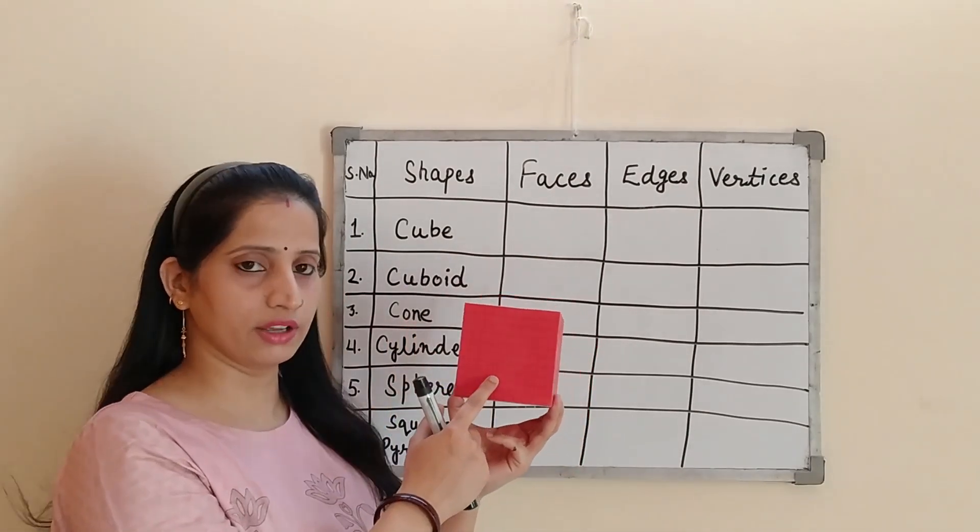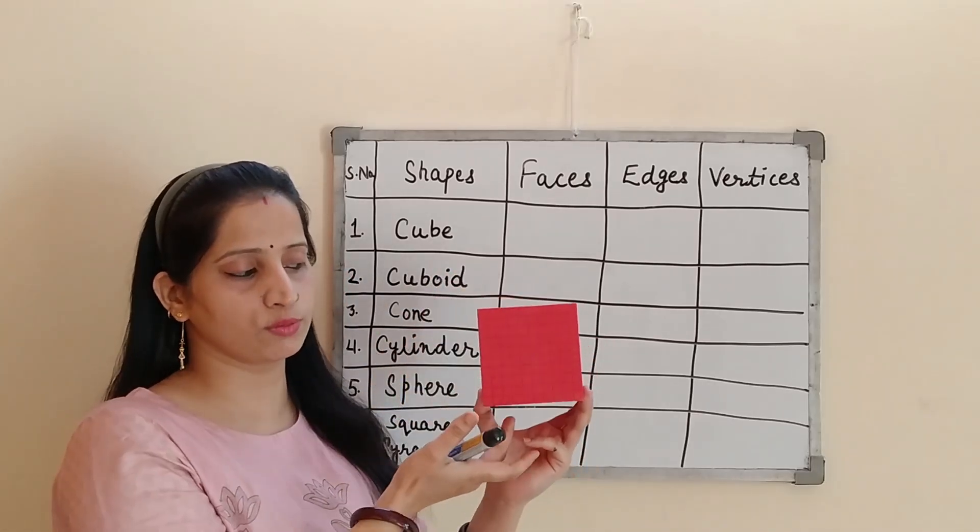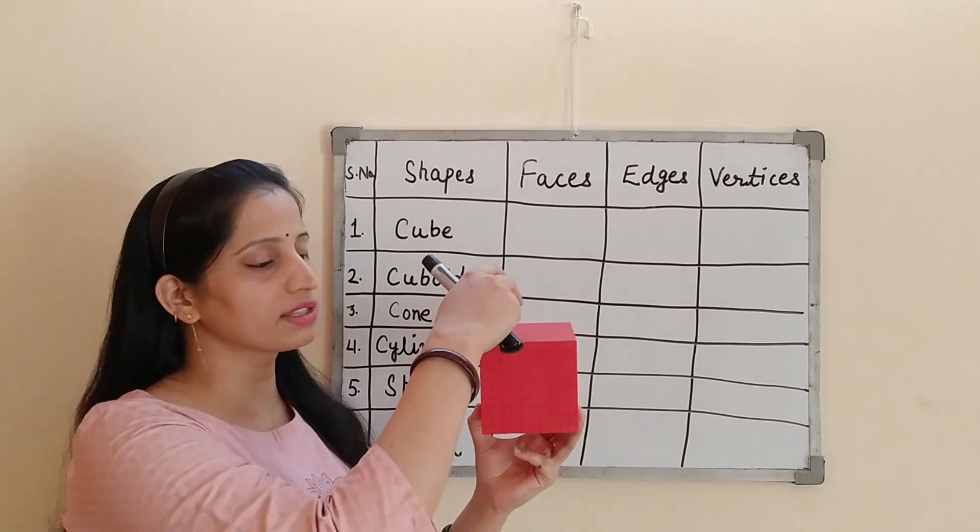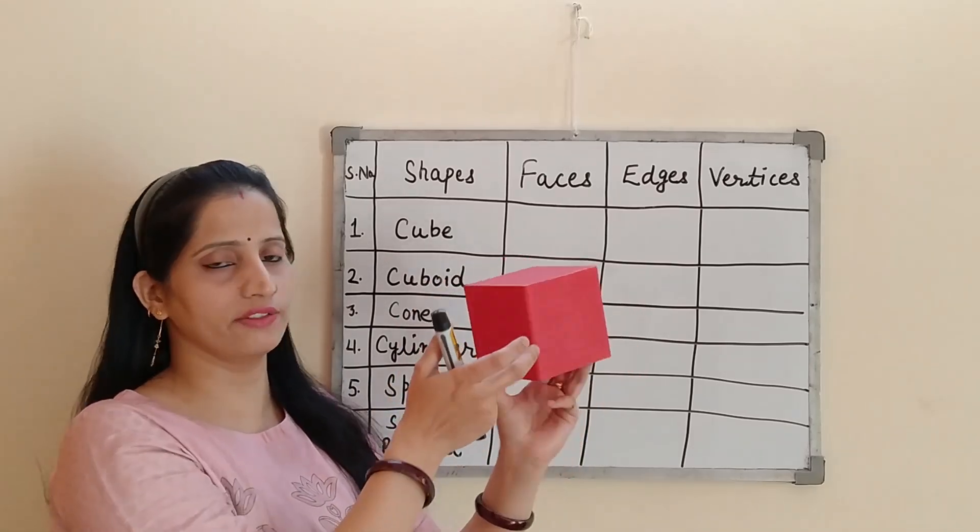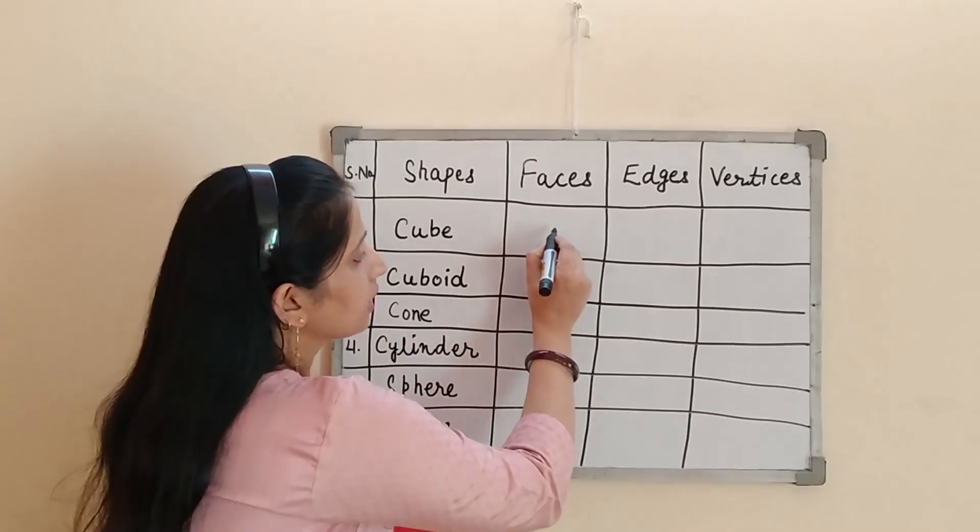This is called the front. This is back. This one is top. This one is bottom. This one is right and this one is left. So how many faces? 1, 2, 3, 4, 5, and 6. This means a cube is having 6 faces.